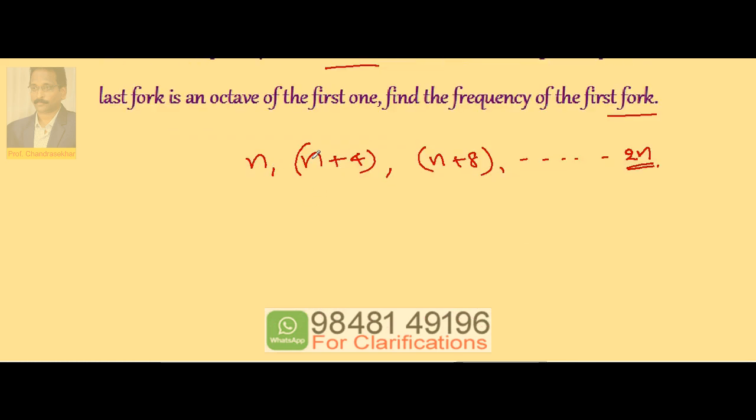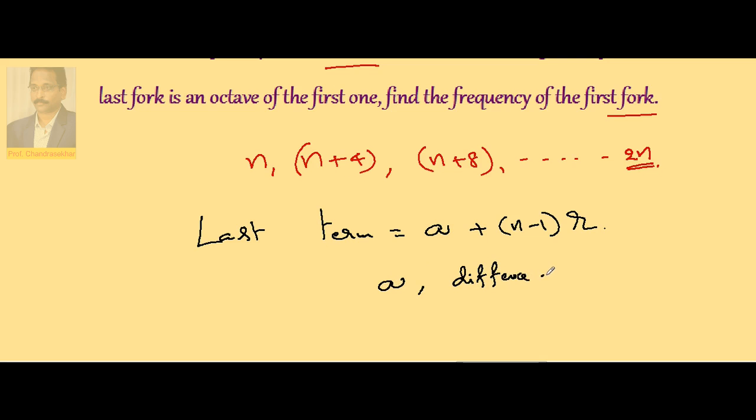They are arranged in AP, arithmetic progression. So last term in AP is equal to first term plus (n minus 1) into R. Here I am taking the terms, first term as A and difference as difference between any successive ones as R. n is the total number.